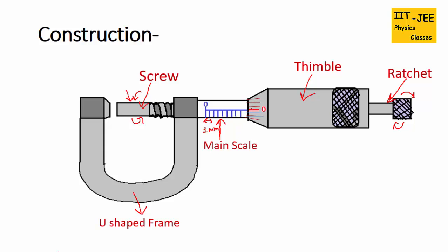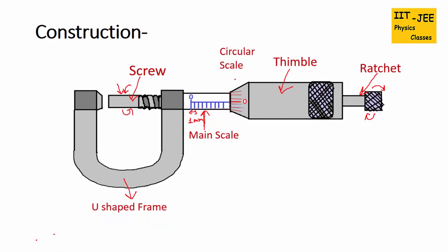The second scale is the circular scale which is marked on the thimble. It has only number of divisions which are equally spaced. Some screw gauge has 50 divisions while most of the screw gauge has 100 divisions on circular scale.